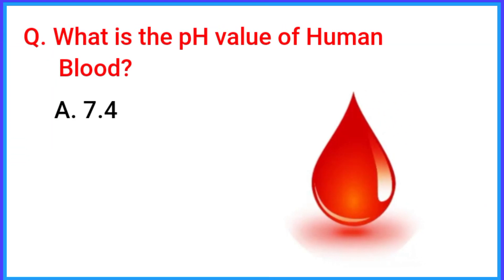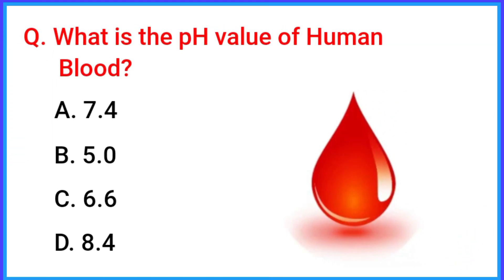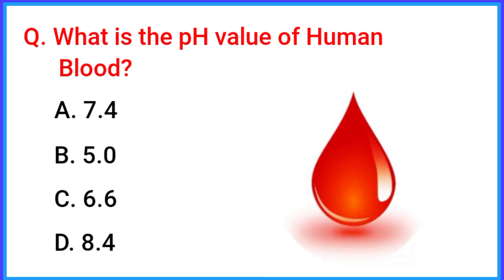What is the pH value of human blood? The correct answer is option A: 7.4.